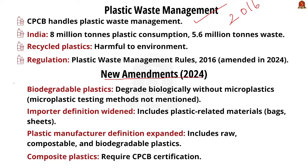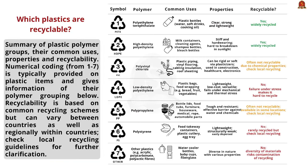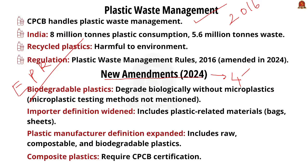The new amendment classified plastics into four categories: Category 1 — rigid plastic packaging; Category 2 — flexible plastic packaging (single or multi-layer); Category 3 — multi-layered plastic packaging; Category 4 — plastic sheets and carry bags made of compostable plastics.